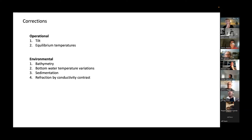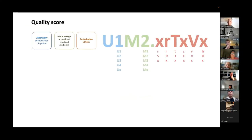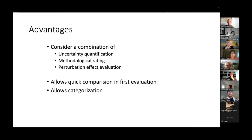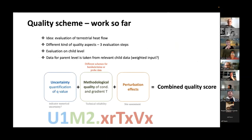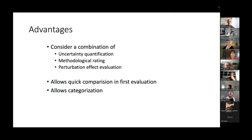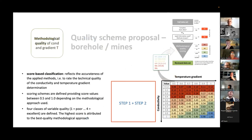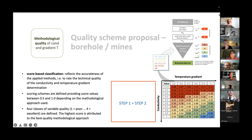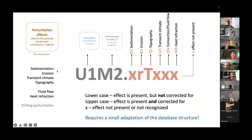Sedimentation and refraction are already included in the borehole scheme. Apparently we need to also consider bottom water temperature variation and bathymetry. The symmetry makes sense — bathymetry and topography are basically the same correction: one's on continents and one's under water. Bottom water temperature variation is like a transient climatic effect — a transient bottom water temperature effect. So probably all the environmental effects that exist for boreholes are there for marine data too — just need to change the semantics slightly.